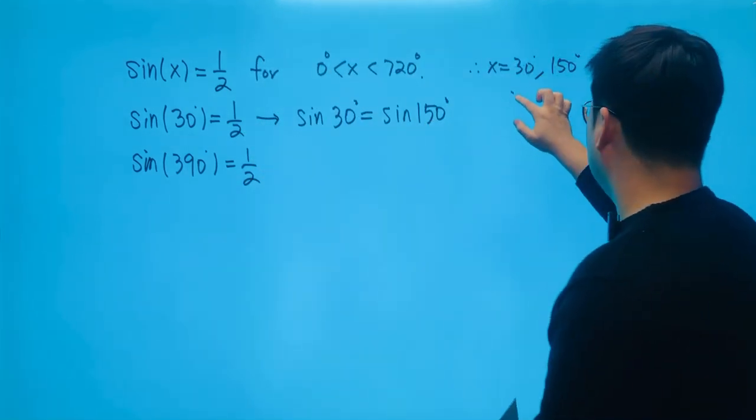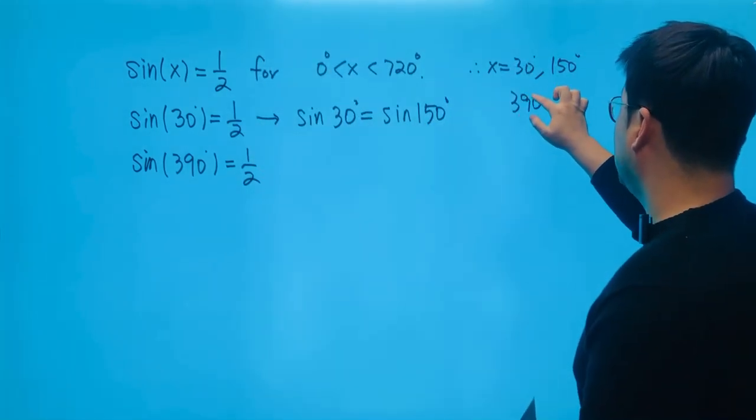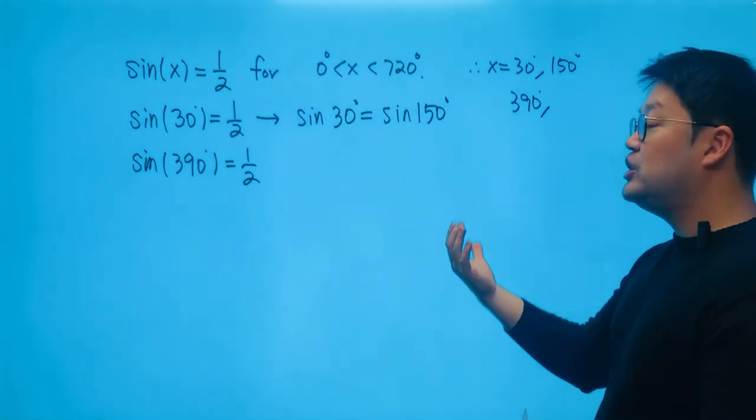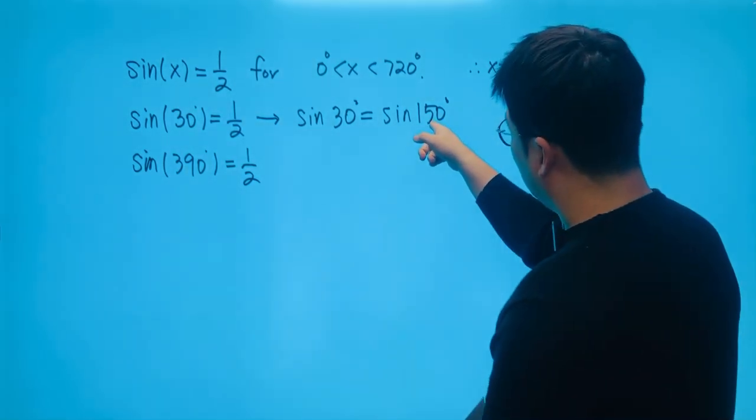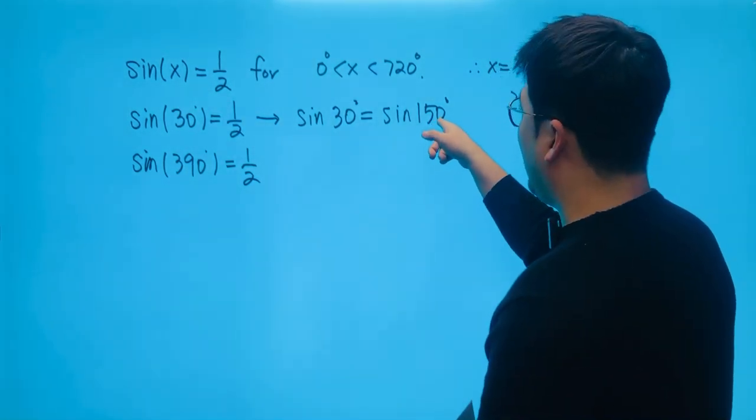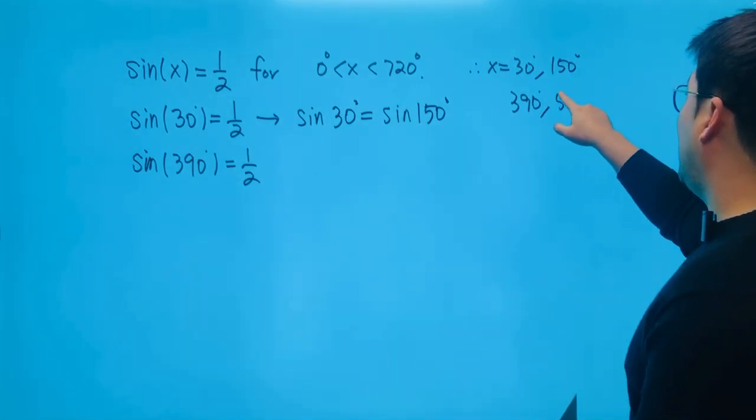So in other words, we have 390, right? And at the same time, if I just make sure that 360 is being added to that number, which is, I would say, 510.